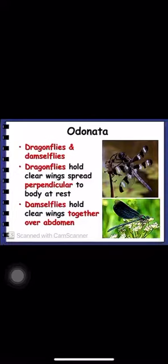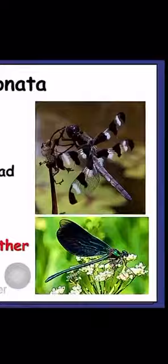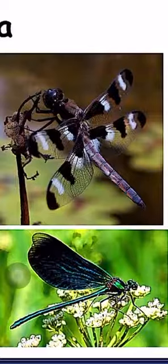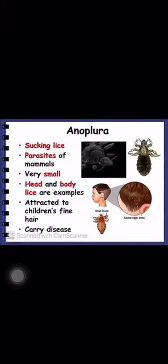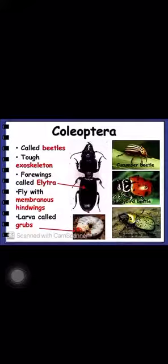Then come Odonata, which includes dragonflies and damselflies. They are very fast flyers, both pairs of wings are membranous and used for flying, and they have very large eyes. Then comes Anoplura, also called Siphunculata, which includes sucking lice. They are parasitic and suck blood. In human beings, for example, we have Pediculus — human lice. Then comes Coleoptera, which includes beetles. In beetles the forewings are modified into totally hard structures called elytra, and the larval forms are called grubs.